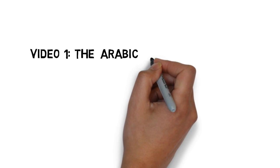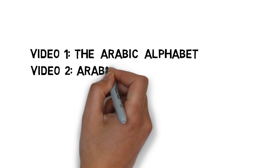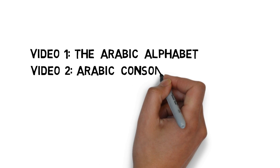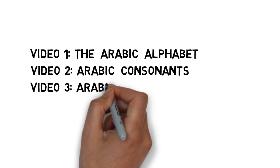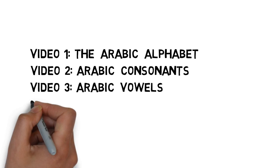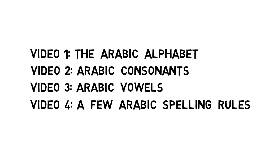We'll break this discussion up into four parts. The first will cover the Arabic alphabet, the second will discuss Arabic's consonants, the third will cover the vowels, and the fourth will cover a few of Arabic's spelling rules. And just so that we're really accurate with our examples, I have a native speaker here, Mustafa, who will be helping us out.